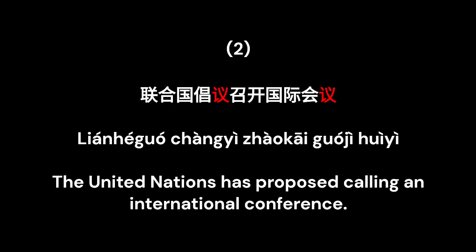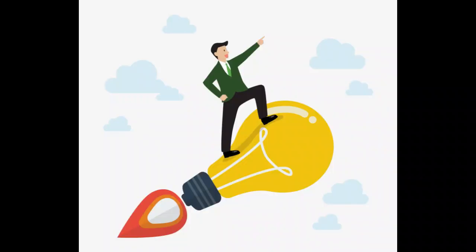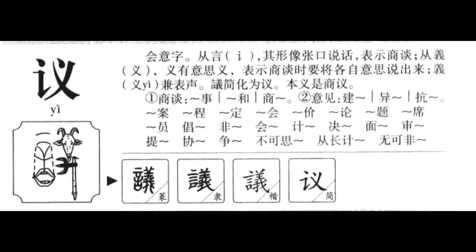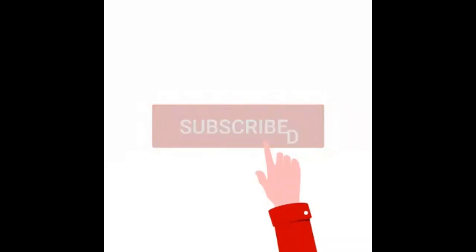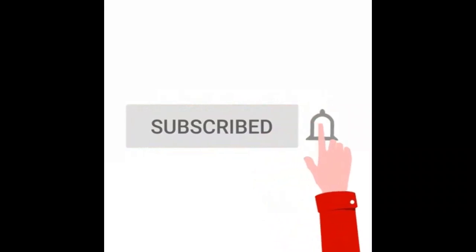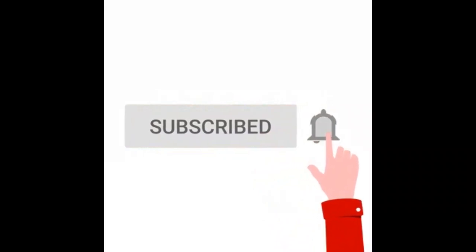Yēn heu guo chāng yī, zào kai guo ji hui yī. The United Nations has proposed calling an international conference. So there you have it, now you know the character for proposal in Chinese. Congratulations on building up your fundamental Chinese vocabulary. Please subscribe and stay tuned for more Chinese lessons.